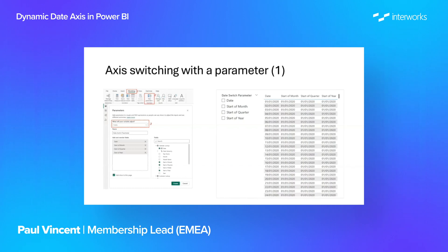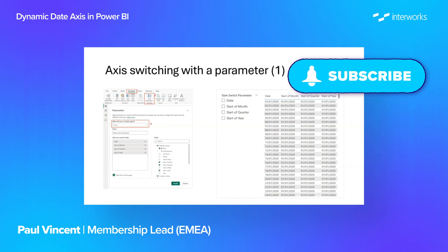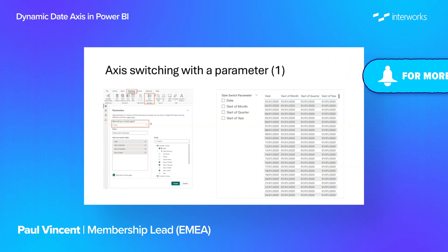My data model already contains a calendar table — a date dimension — and that gives me everything I'm going to need for this switching. The date table has one row for every date in my date range and it includes columns that give me the individual dates, the start of the month date, the start of the quarter date, and the start of the year date. I'm going to add each of these fields to my parameter so that when I switch the parameter it'll select one of these columns and bring that into a view for me.